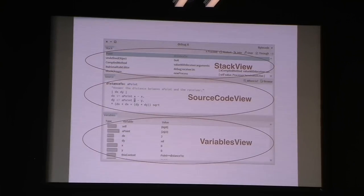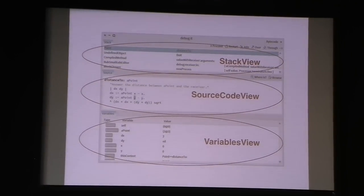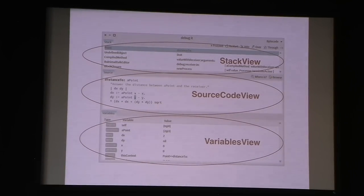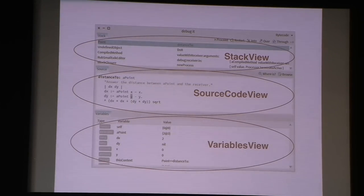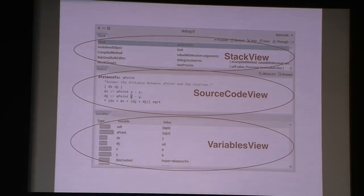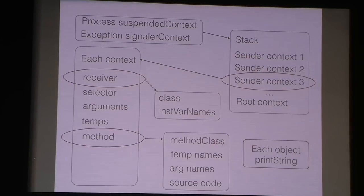Let's start with the local debugger. We all know what it does, but I want to mention how many properties the debugger shows and how deep a model it represents. For example, the stack view retrieves context, produces an extended context stack with a collection of senders of each context. It shows every context's receiver class, selector, and source code retrieved from the selected context. On the variables view, it asks each context for receiver variable values, and the receiver class asks for inspectable names, while the context itself asks for temps, and the compiled method asks for temp names. So it's quite a lot of properties.